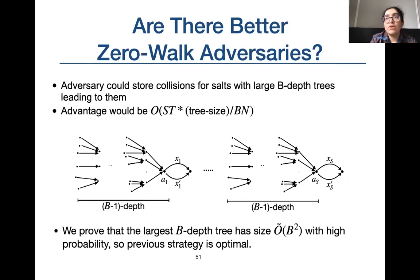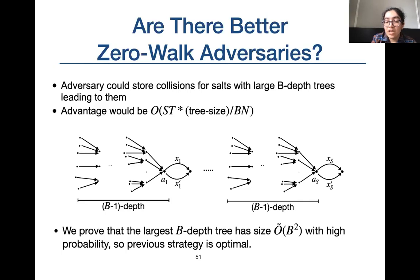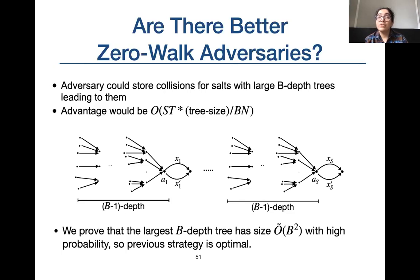There could be a zero-walk adversary that during pre-computation finds and stores collisions for salts with large B-depth trees, achieving advantage of (T/B) × S × (max size of B-depth trees)/n. We prove that the existence of such large trees is unlikely by bounding the size of the largest B-depth trees in random functional graphs to order B² with high probability. This shows that for any zero-walk adversary, the attack from the previous slide is optimal.